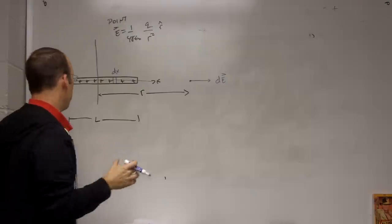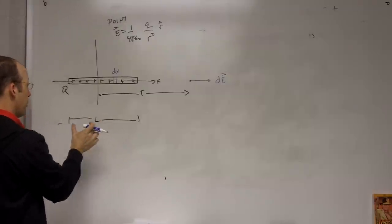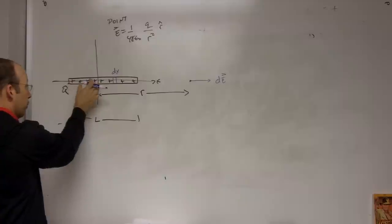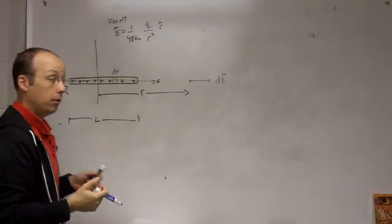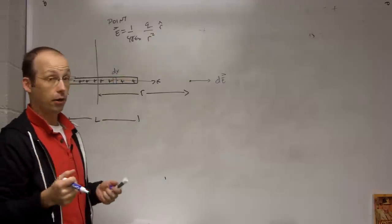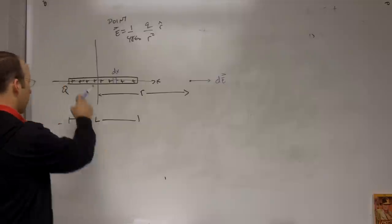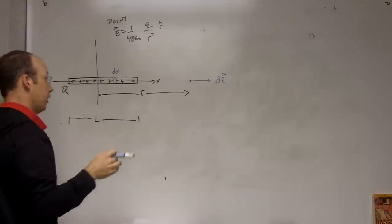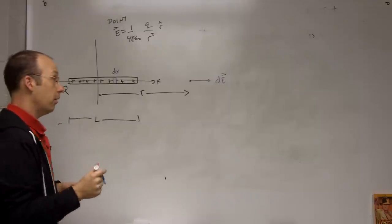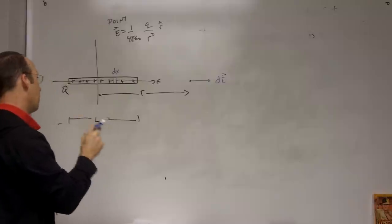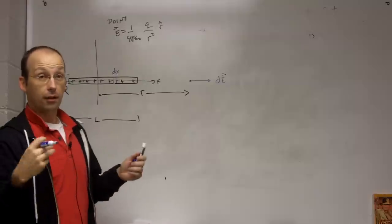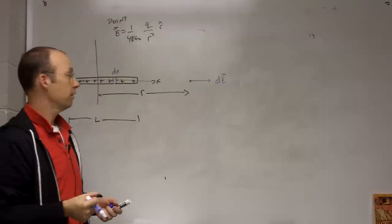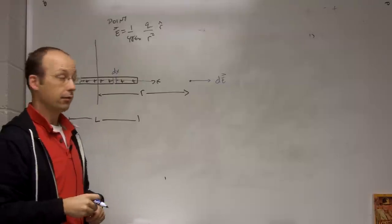I mean, if you wanted to, you could really do a very simple approximation, say this is one point in charge Q over 2 centered right here, another one centered right there. Of course, if I broke it into 4, it'd be better. If I broke it into 20, it'd be even better. If I took the limit as the number of points went to infinity and the length of this went to 0, that would be really great. That's what an integration is.